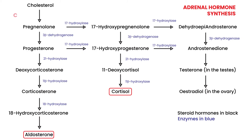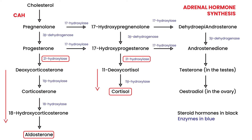Congenital Adrenal Hyperplasia involves deficiency of an enzyme — in particular, 21-hydroxylase. When you don't have this enzyme, the pathway that goes all the way down to making aldosterone does not happen, and also the pathway that involves making cortisol does not happen. So you don't get cortisol and you don't get aldosterone.